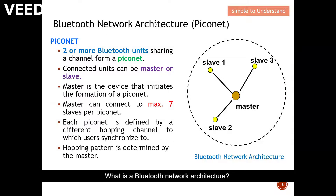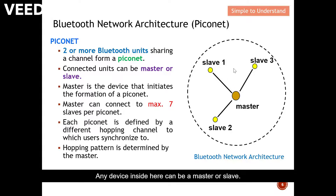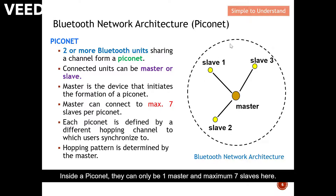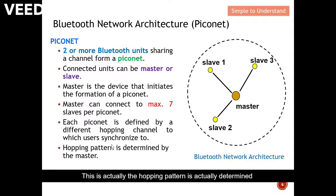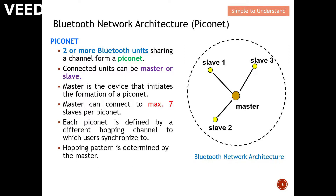What is Bluetooth network architecture? This diagram shows the Bluetooth network architecture. When two or more Bluetooth units share a channel, they form a piconet, indicated by the dashed line. Any device inside can be a master or slave — the master is the device that initiates the formation of the piconet. Inside a piconet there can only be one master and a maximum of seven slaves. Each piconet is defined by a different hopping channel, and the hopping pattern is agreed upon during the initial pairing process.